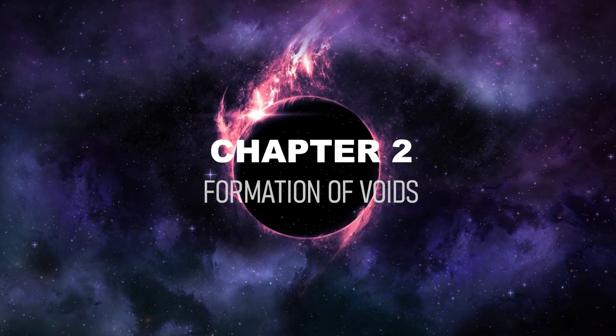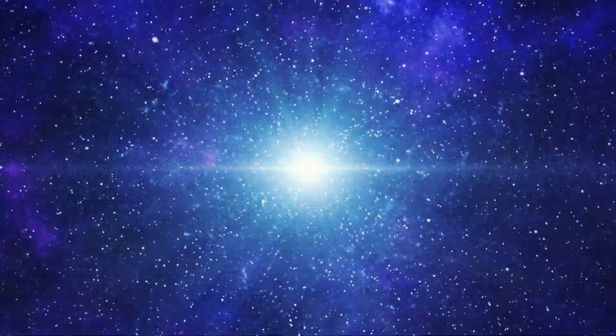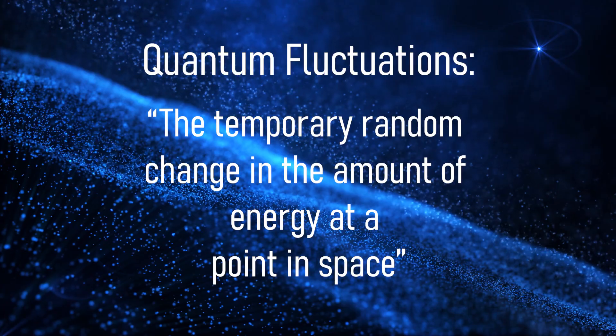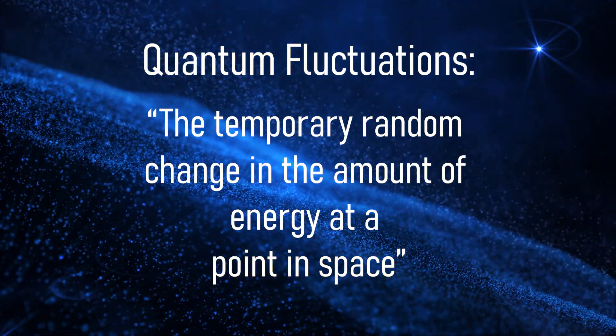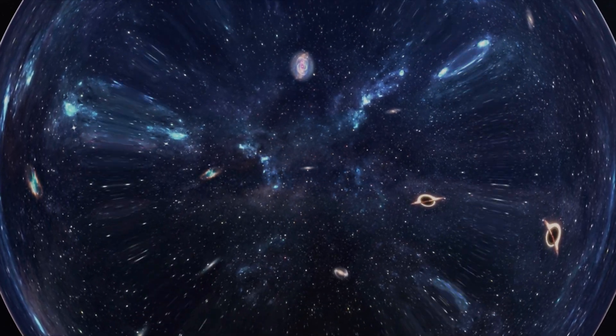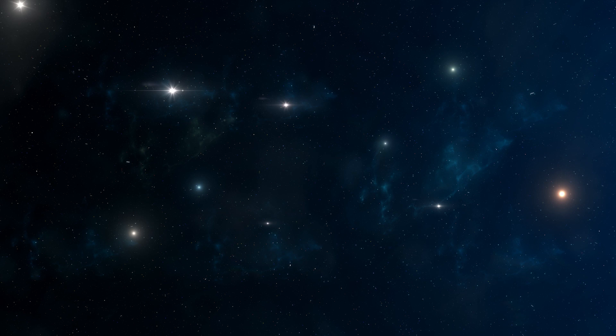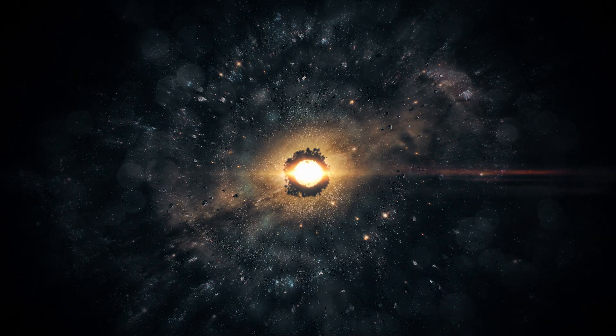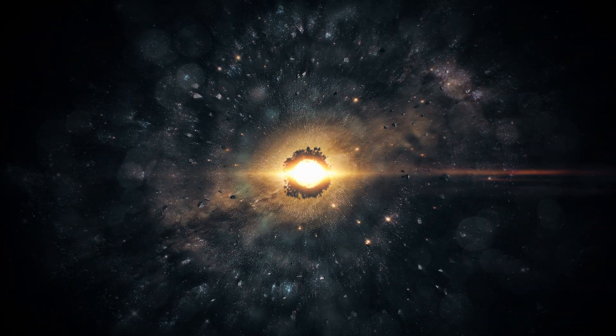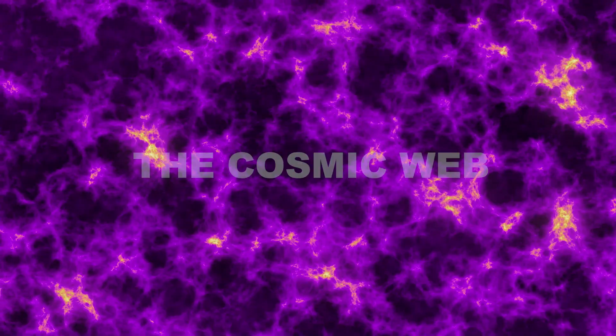Most scientists agree that the formation of voids dates back to fluctuations in density during the Big Bang, 13.8 billion years ago. In the very beginning, the universe was immeasurably small and under extreme pressure. Quantum fluctuations began as the universe entered cosmic inflation — expansion faster than the speed of light. Quantum fluctuations are defined as the temporary random change in the amount of energy at a point in space. These took place as the universe went from nothing to infinitely large, creating areas that varied in density. Dark matter spread, atoms began forming structures and building filaments, making the cosmic web.